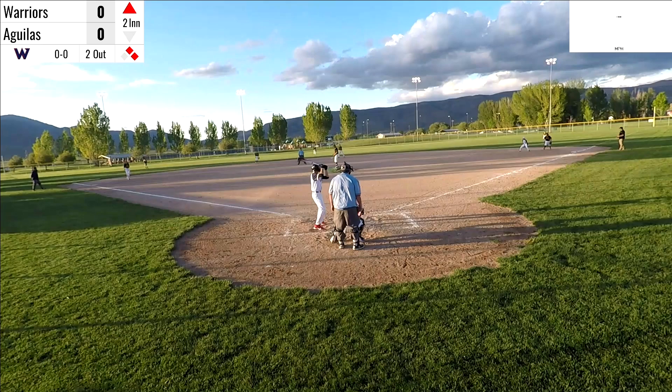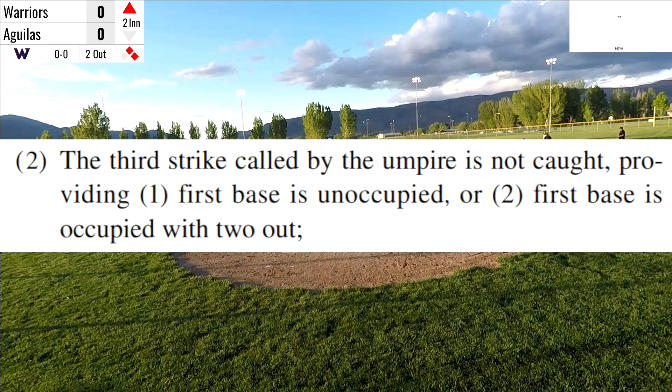Let's take a look at the rule here to understand why this is in play. So the situation is that in the rule book, we say that the third strike called by the umpire is not caught, providing first base is unoccupied, or first base is occupied with two outs. So this allows the batter to become a batter-runner. The reason why first base needs to be unoccupied with less than two outs is because it gives the defense